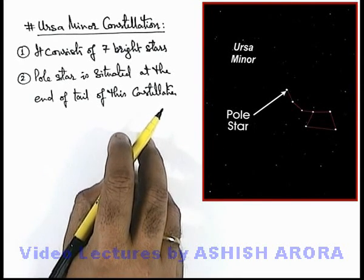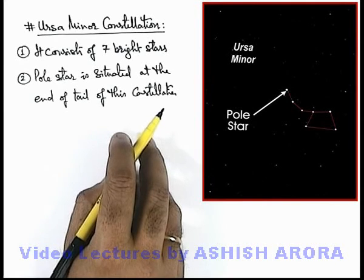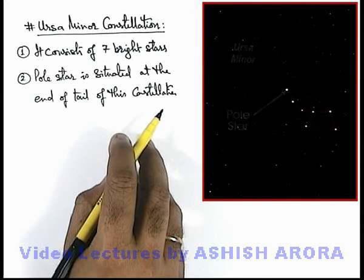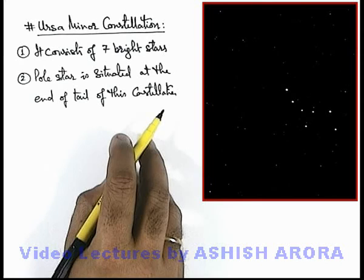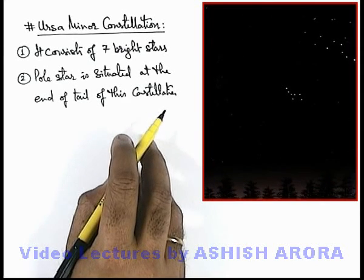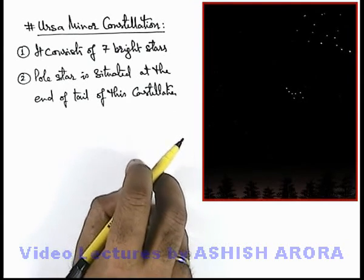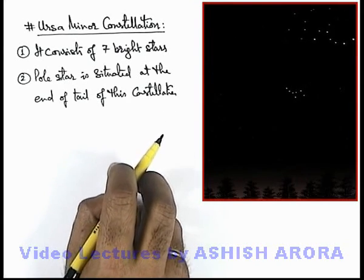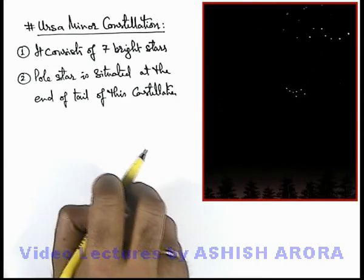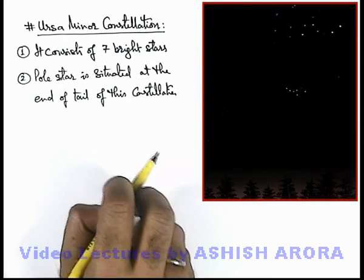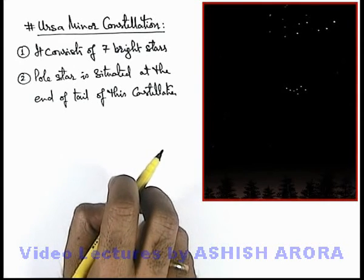So if we are able to see the pole star in the sky, then we can easily locate this Ursa Minor constellation. And if we observe the night sky for a long time, we can see that all 6 stars other than the pole star revolve around the pole star, keeping the shape of this Ursa Minor constellation the same.